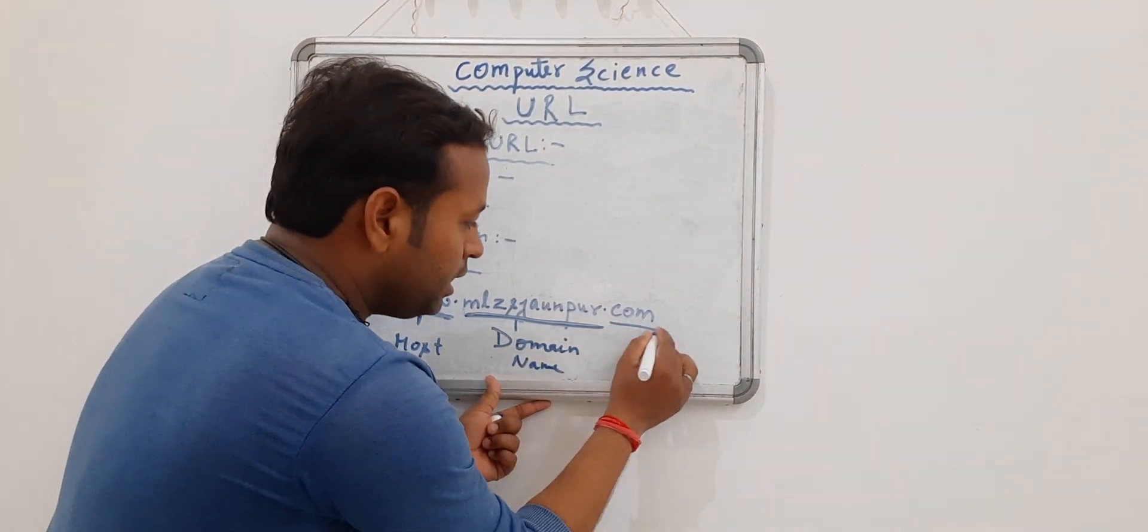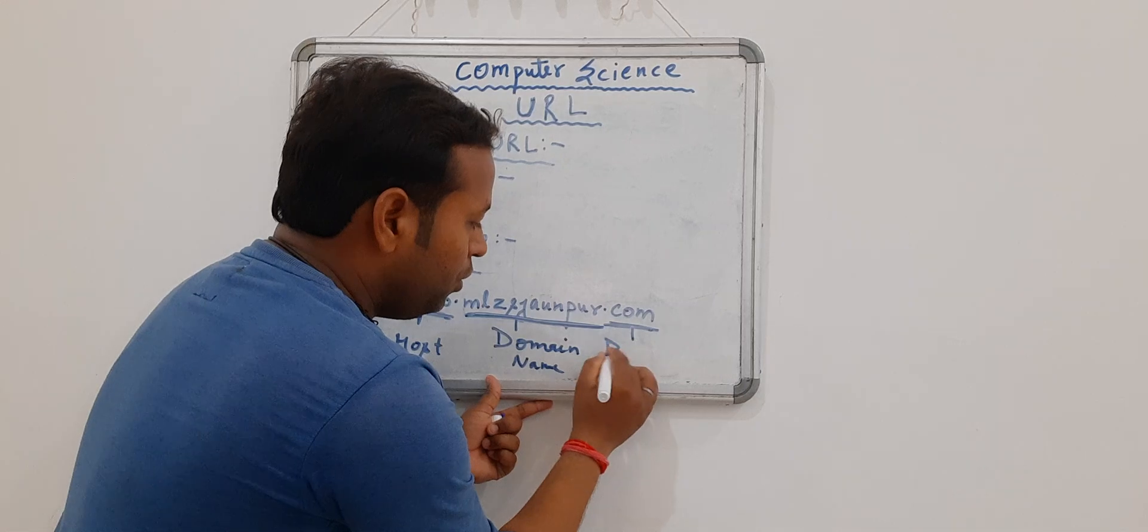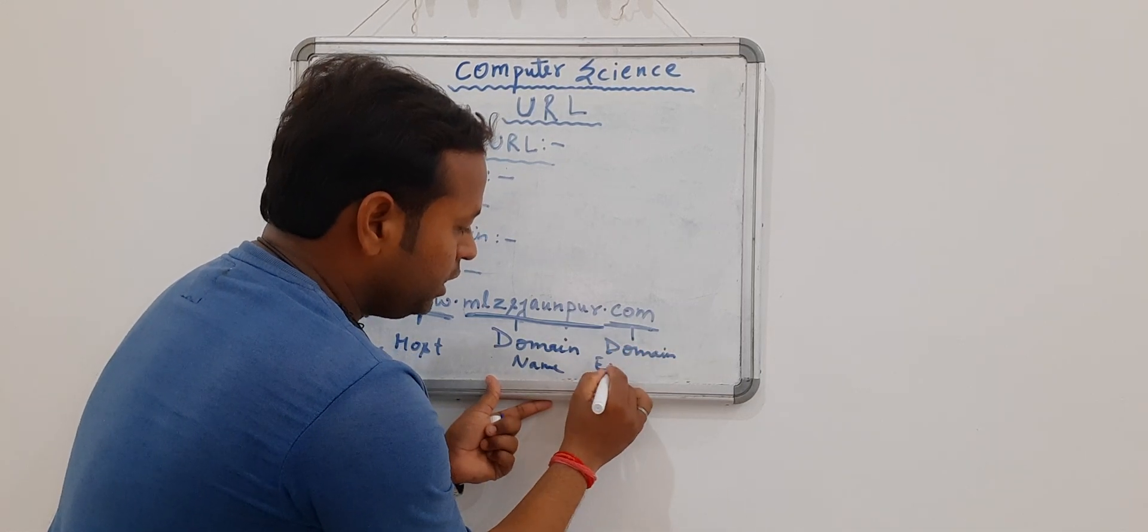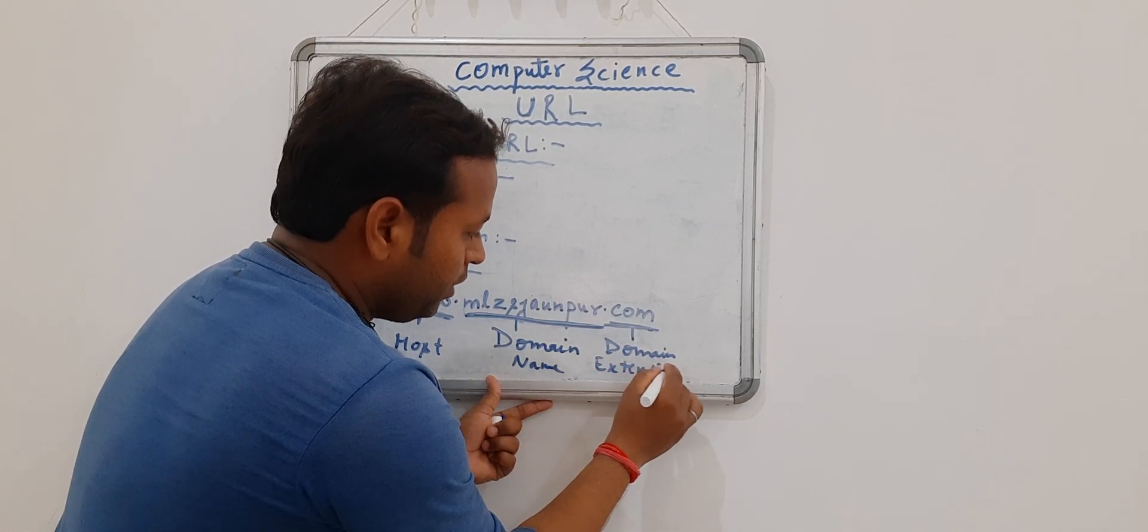And last dot com is there. This one is called domain extension. What? Domain extension. What is called? Domain extension.